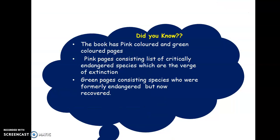Did you know what this book actually includes? This book generally consists of two different colored pages — pink colored pages and green colored pages. The pink colored pages consist of a list of critically endangered species which are at the verge of extinction in the future, while the green pages consist of species which were formerly endangered but are now being recovered.